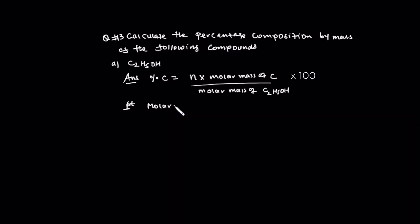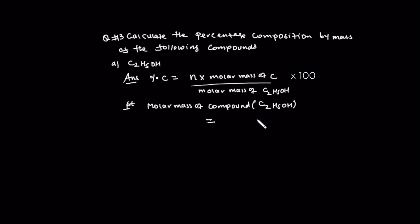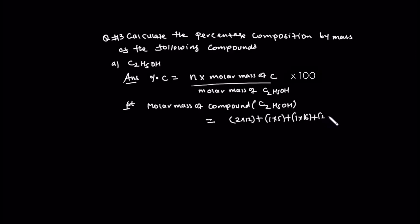So basically we should determine the molar mass of C2H5OH. Molar mass of compound: carbon 2 times 12, plus hydrogen 1 times 6, plus oxygen 1 times 16, plus 1 times 1.